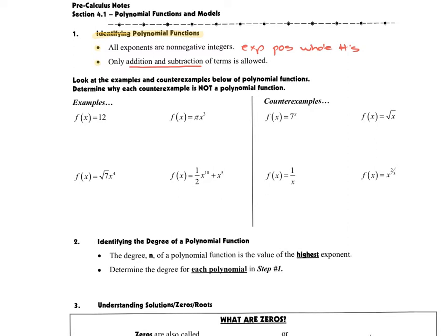Looking at the examples and counterexamples here, we're going to spend some time looking at what makes them polynomials or what makes them not polynomials. All the ones on the left are in fact polynomial functions, and we want to identify the degree. This is actually going to be our step two, so we're going to do steps one and two simultaneously. The degree of the polynomial function is simply the highest exponent.